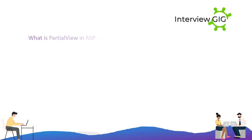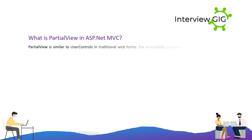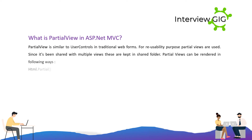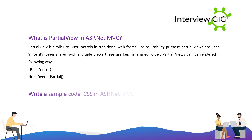What is a partial view in ASP.NET MVC? A partial view is similar to user controls in traditional web forms. For reusability purposes, partial views are used. Since they are shared with multiple views, these are kept in the Shared folder. Partial views can be rendered using HTML.Partial or HTML.RenderPartial.